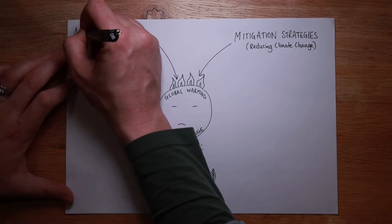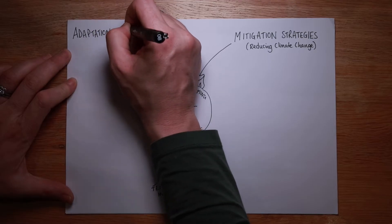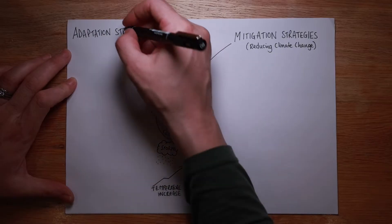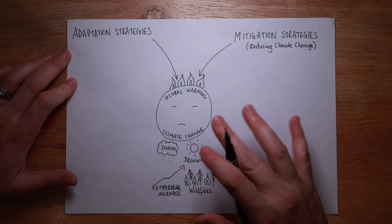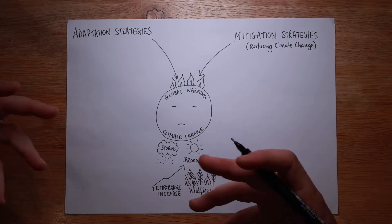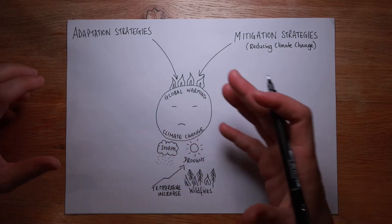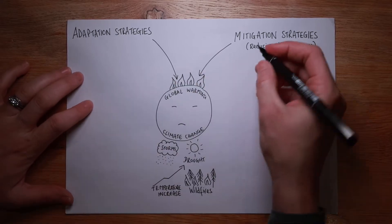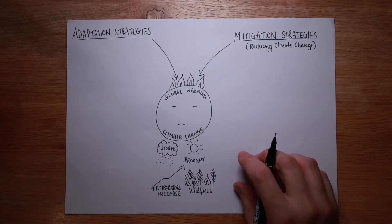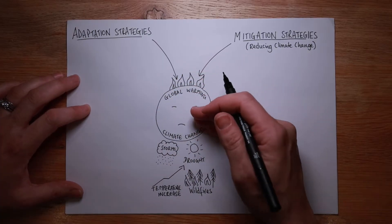On the other side, we've got something called adaptation strategies. These do not try and solve the problem. These are only focused on how to reduce the impacts in the short term — to help our lifestyle, to enable us to keep food on the table, to stop homes from flooding. They are not having any impact on actually dealing with the problem.